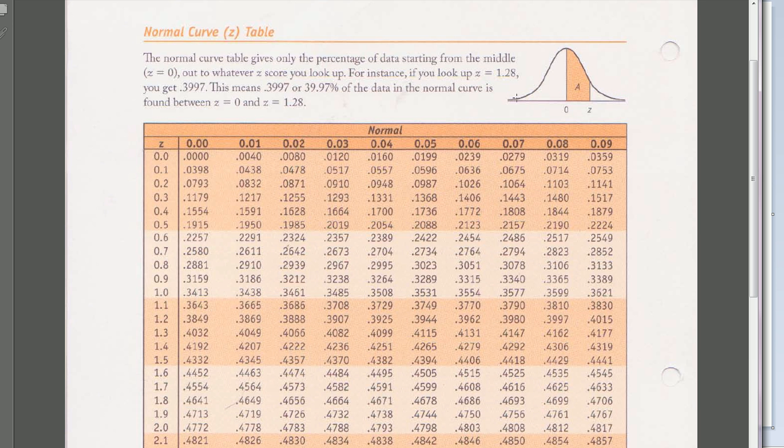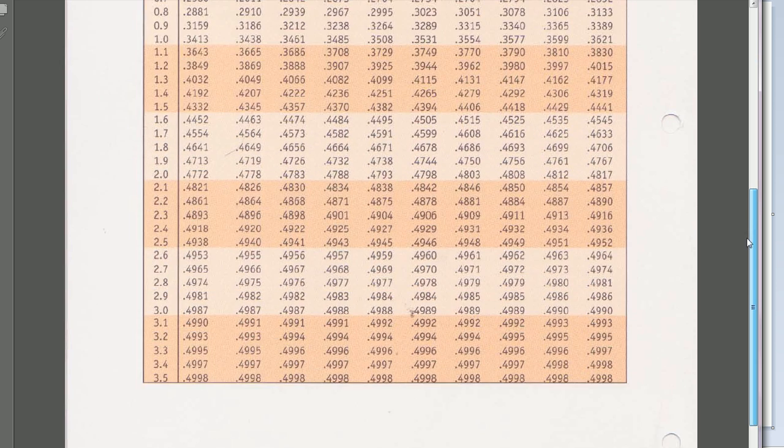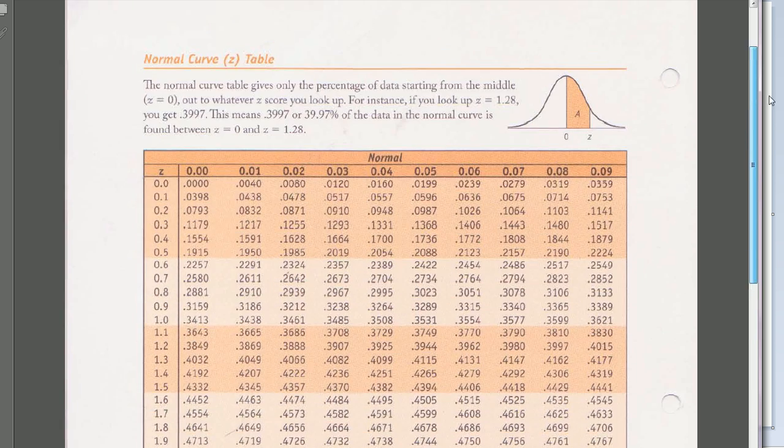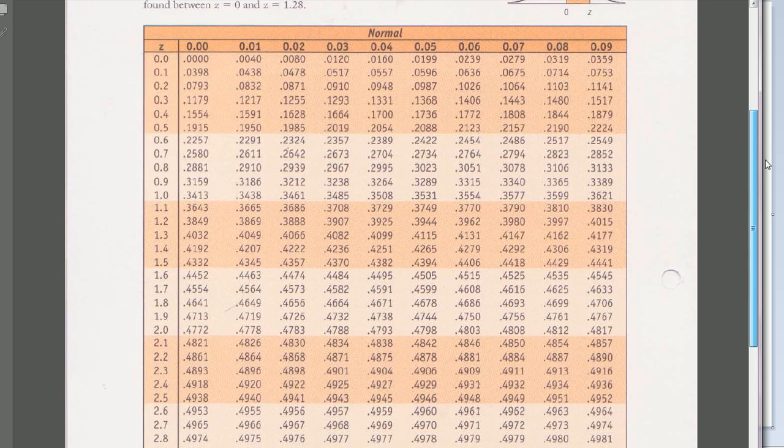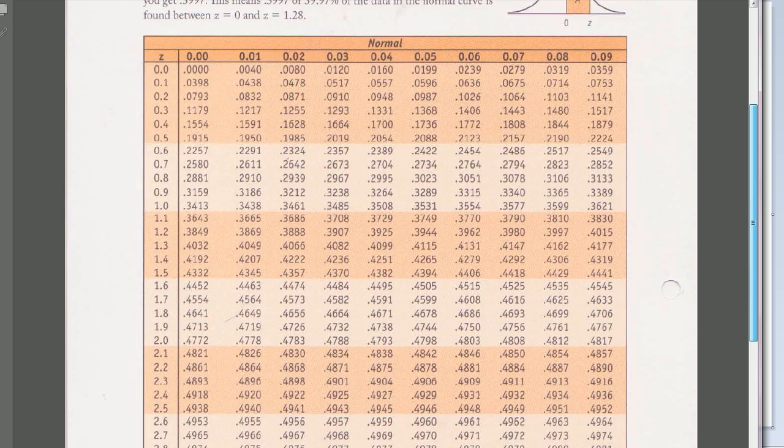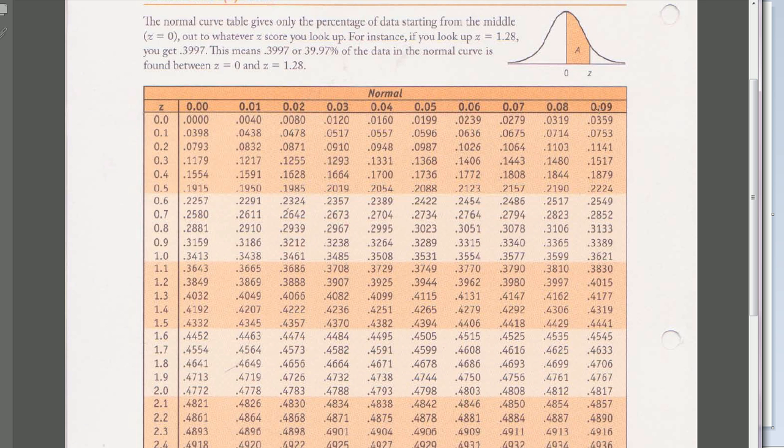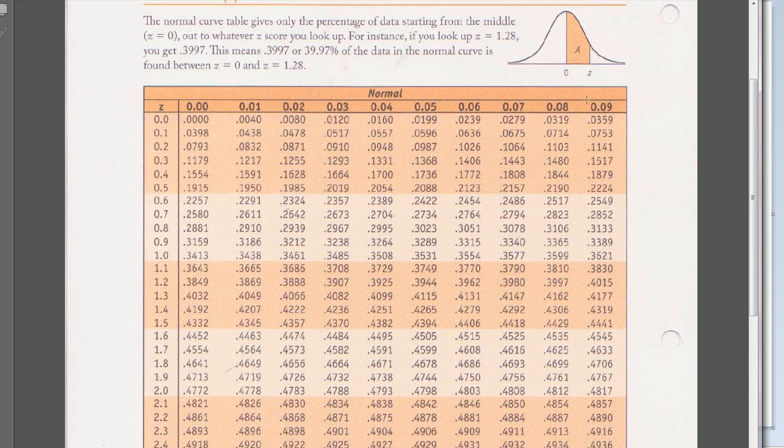So therefore, the table just doesn't have to be many pages long. It can just be one page like the one we're looking at here. See, this is just one page. It goes from Z equals 0 all the way down to Z equals 3.59, and I get that 9 here, this top guy over here.